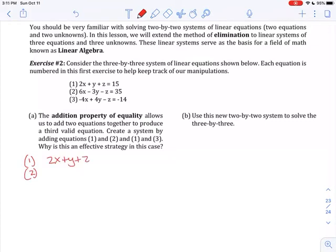So the first thing I'm going to do is I'm going to take equations one and two. So I'm going to take equation one, 2x + y + z = 15, and I'm going to take equation two, which is 6x - 3y - z = 35.